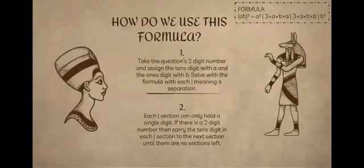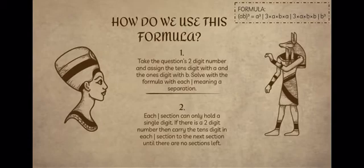The first step in using this formula is to look at the number in the question and renaming the tens digit as A and the ones digit as B. For example, if the question is 49 cubed, then A would be 4 and B would be 9. Now that we have A and B, substitute the A's and B's in the formula.